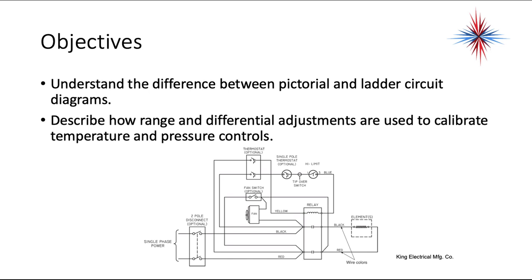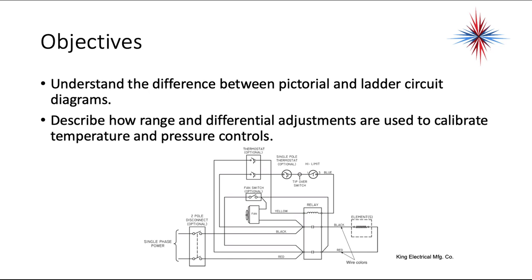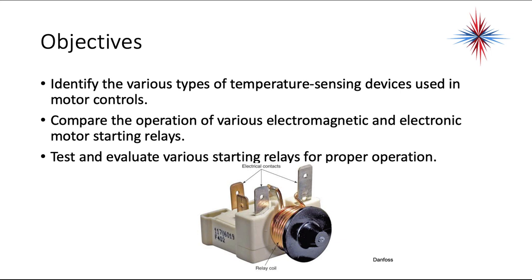Our objectives for this: we need to be able to understand the difference between pictorial and ladder circuit diagrams. We need to be able to describe how range and differential adjustments are used to calibrate temperature and pressure controls. We need to be able to identify the various types of temperature sensing devices used in motor controls. We need to compare the operation of various electromagnetic and electronic motor starting relays, and we need to test and evaluate starting relays for proper operation.